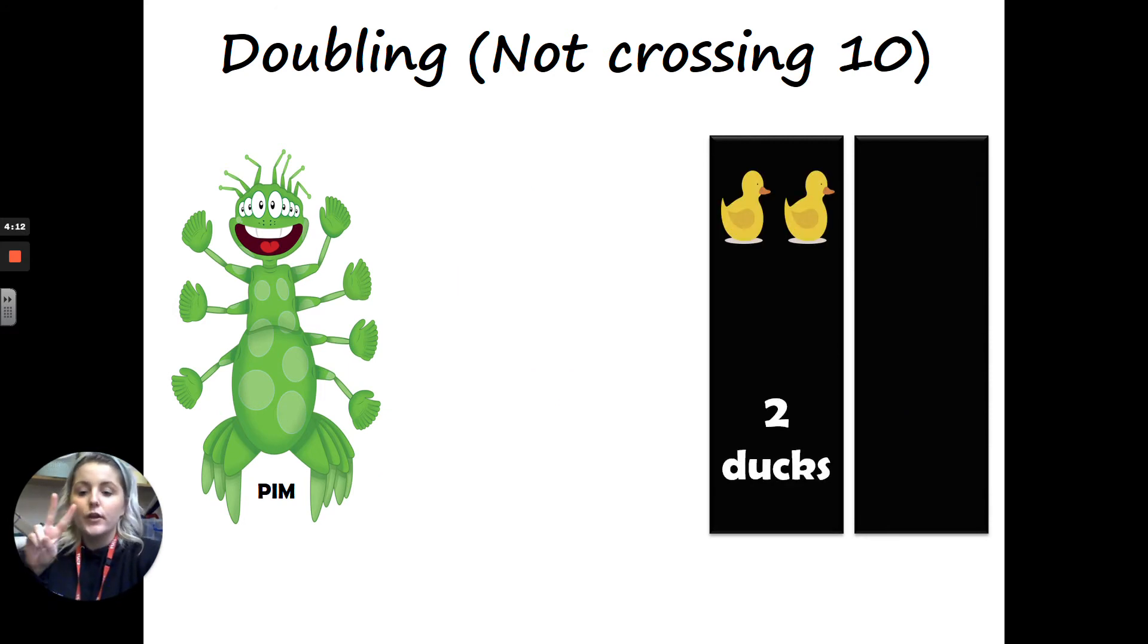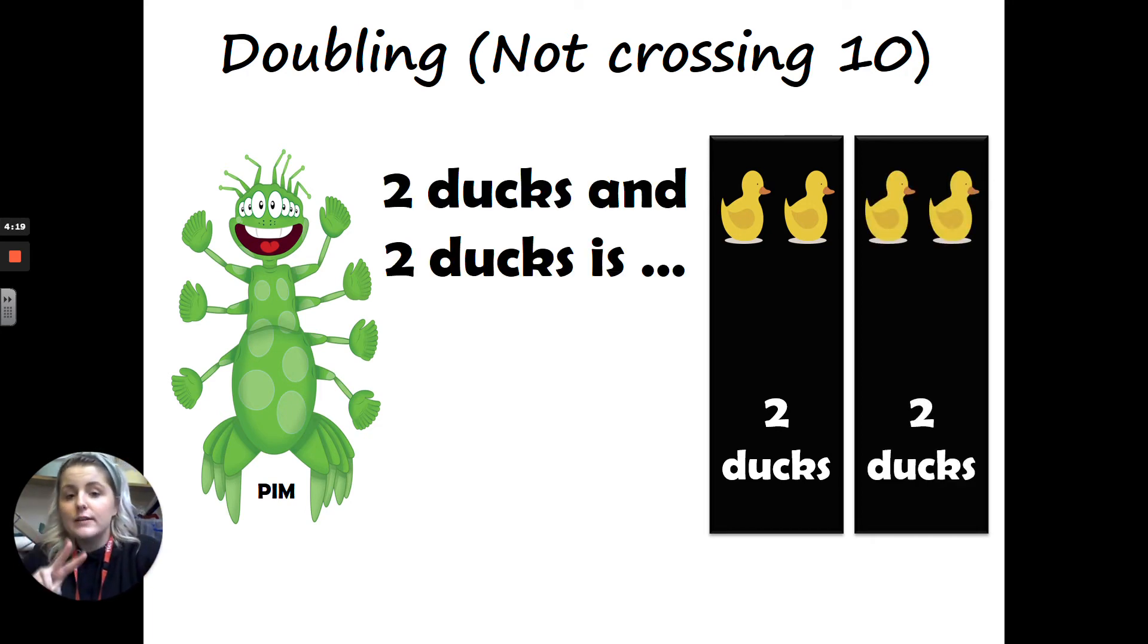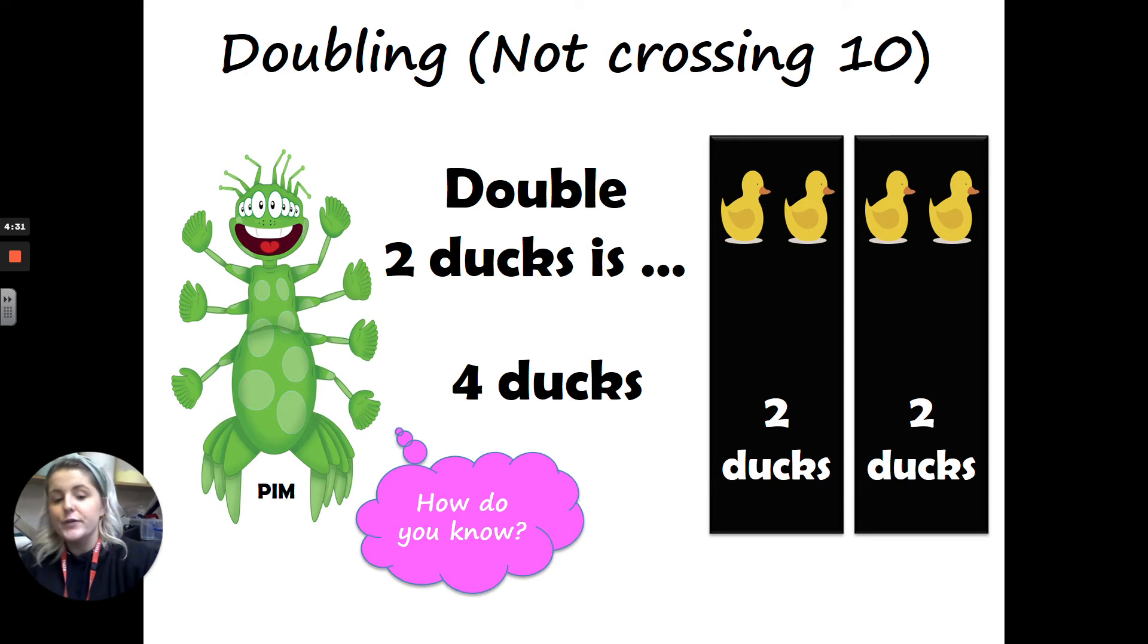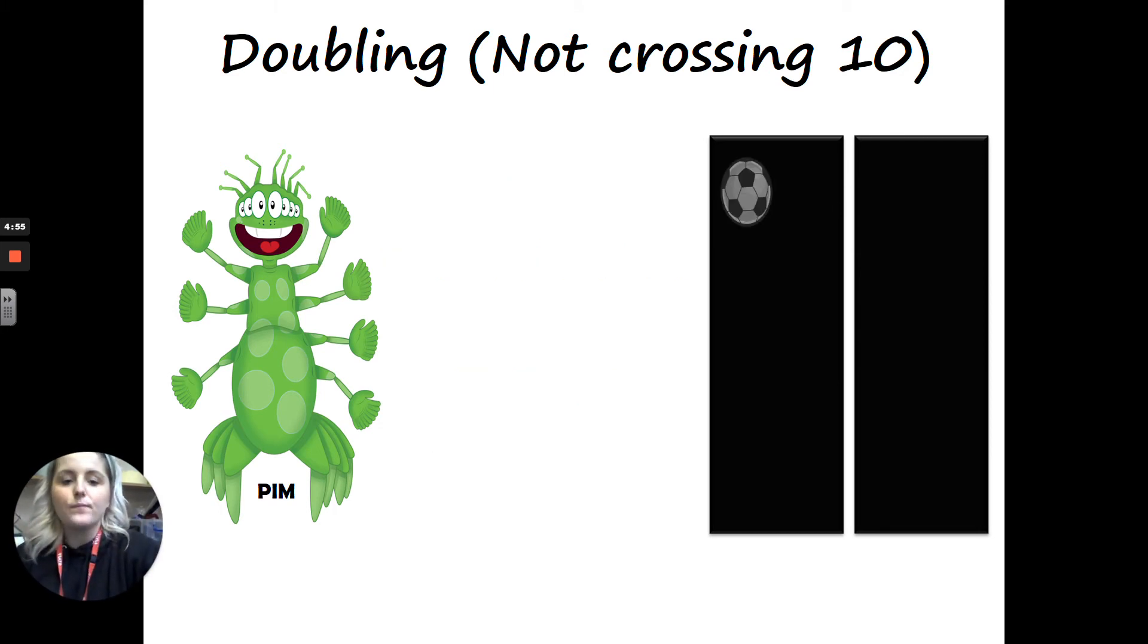Two cats and two cats is four cats and we know that because we counted them. Okay, next one. Two ducks. And two ducks is four ducks. We counted to double, double check. So if two ducks and two ducks is four ducks, that must mean that double two ducks is how many ducks? What's double two ducks? Of course it is. Thank you. Double two ducks is four ducks because two and two equals four. Good job.